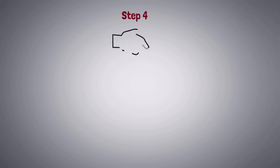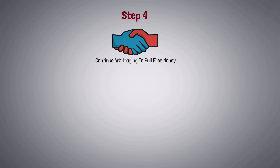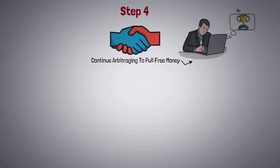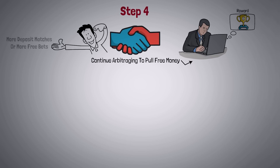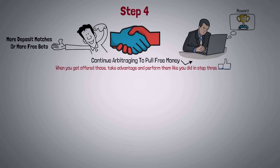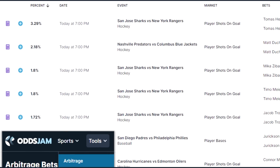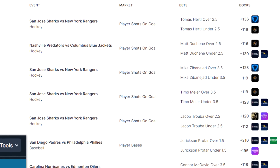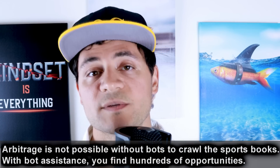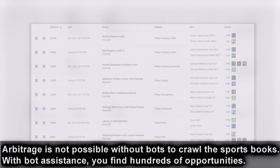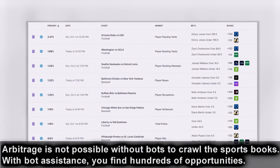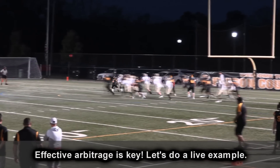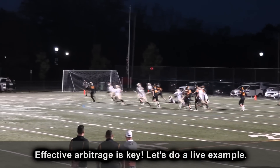Step four is to continue arbitraging to pull free money. By doing this, you are putting on wagers and the sports books will award you for your betting and offer you more deposit matches or more free bets. When you get offered those, take advantage and perform them like you did in step three. OddsJam facilitates this step with their arbitrage calculator — without it, you will not find arbitrage opportunities; instead, you will be guaranteeing that you lose money. You must be using the right game pairs in order to make this arbitrage income.